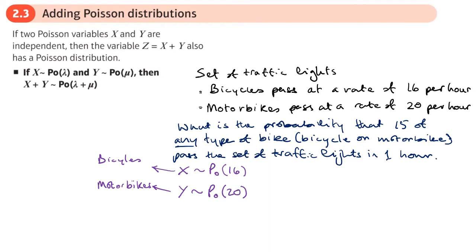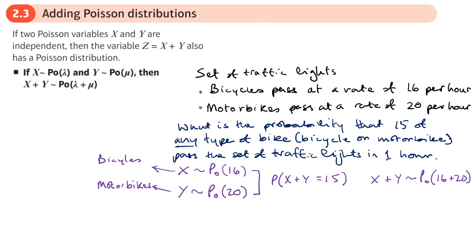What I do in a question like this is find the probability that a bicycle or a motorbike gives me 15 of the types of bikes that pass. I need to work out the rate at which any type of bike passes — a bicycle or a motorbike — and this would be a Poisson distribution where I add together 16 and 20.